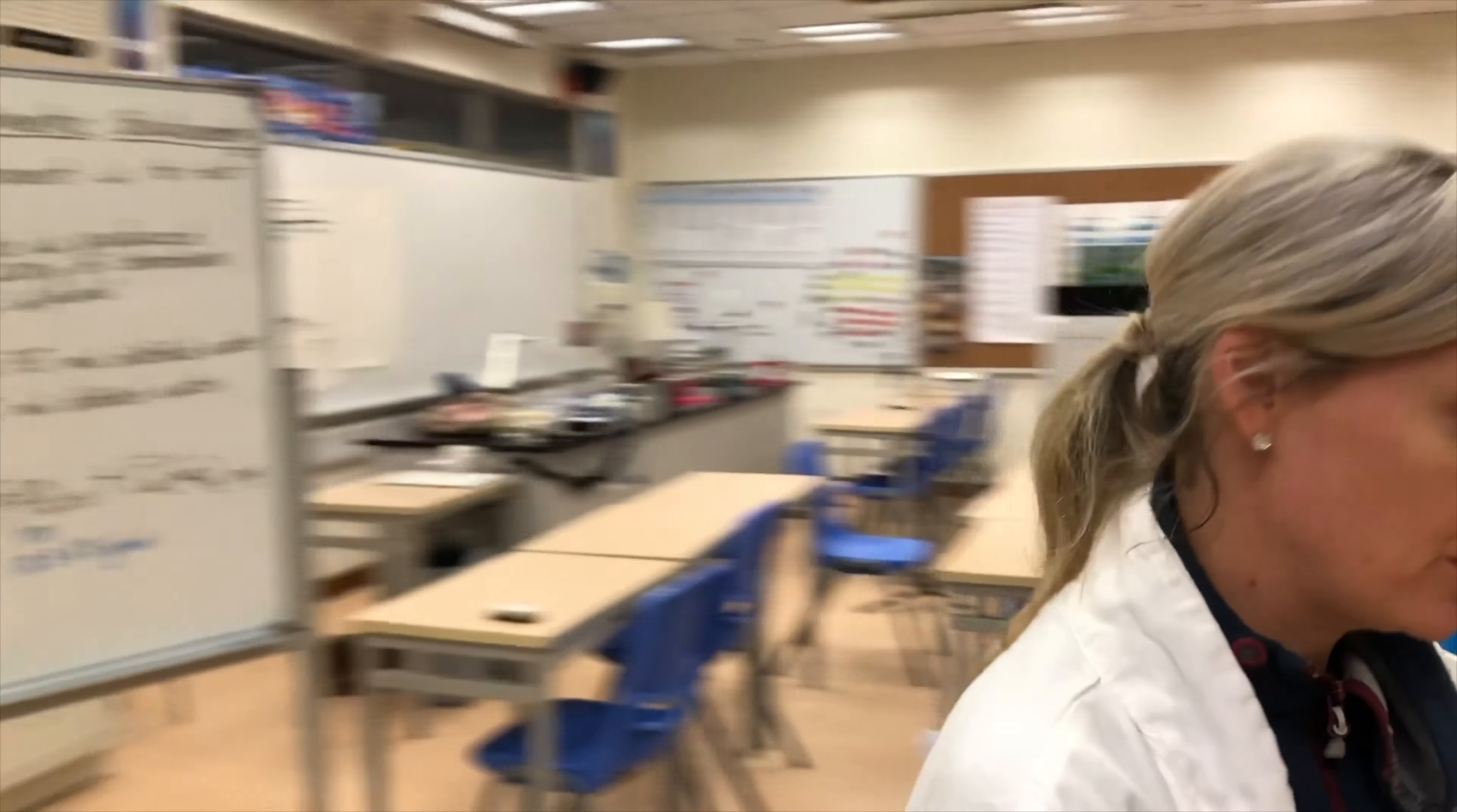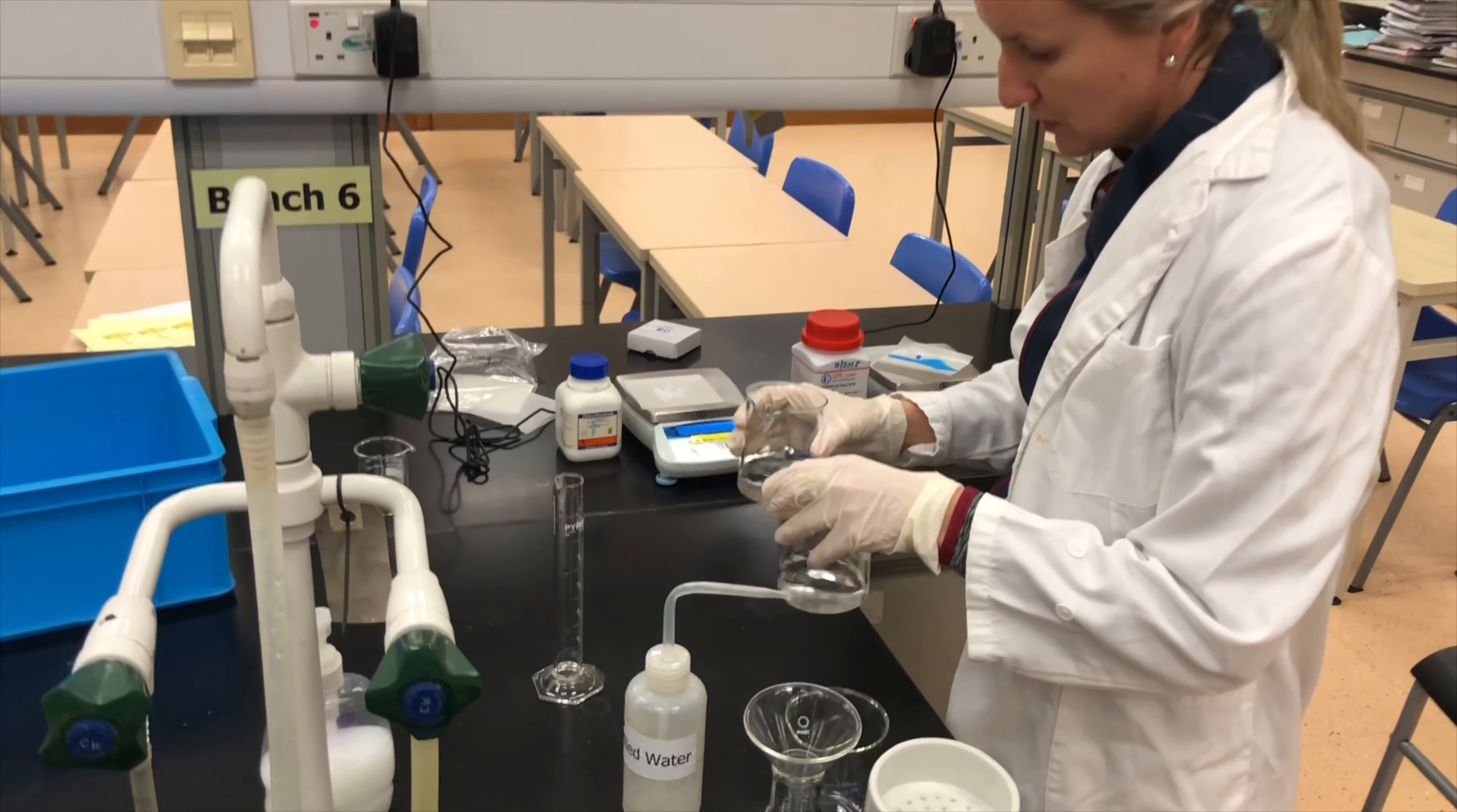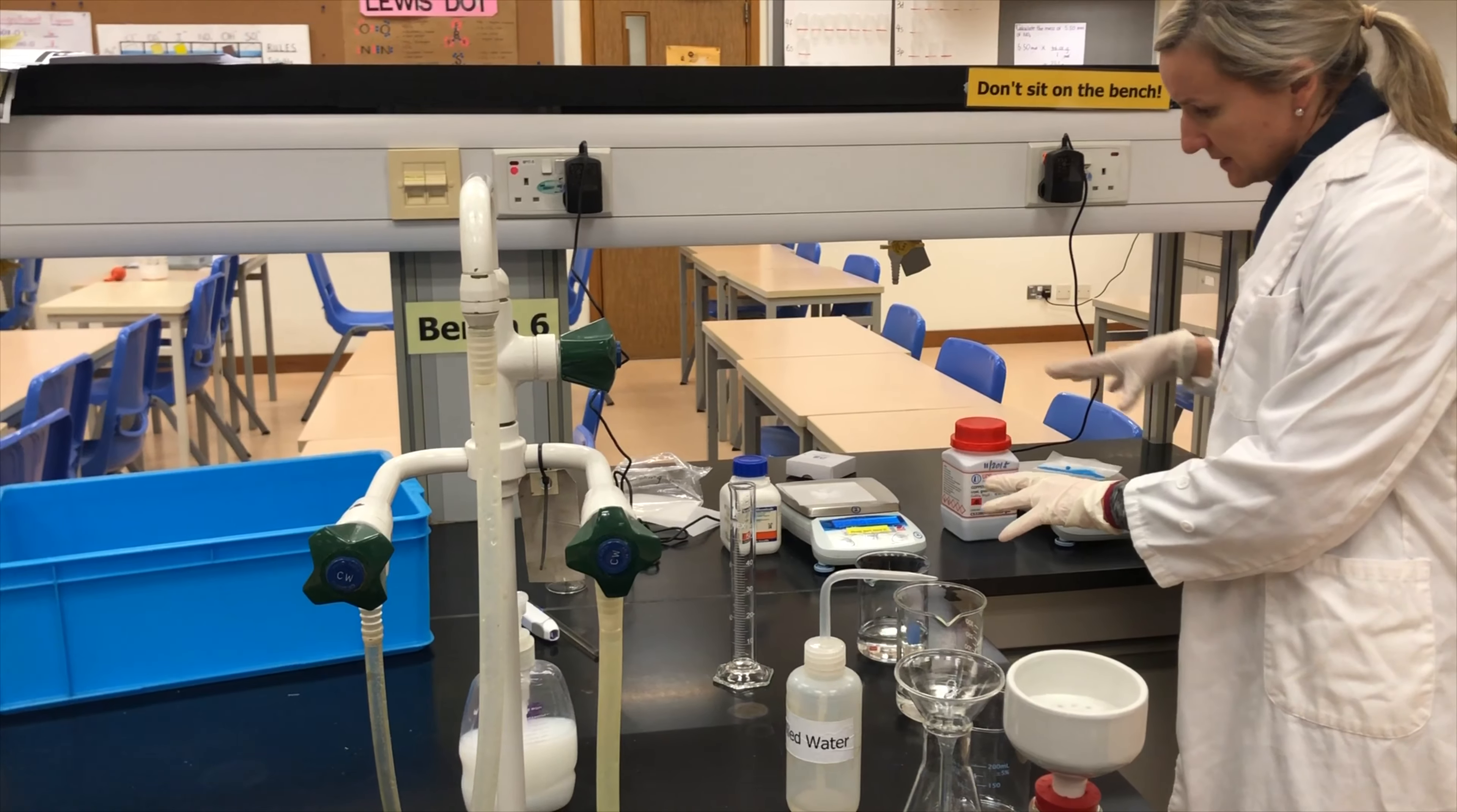So I'm just going to move down to where I've already weighed out our amount of the solid. You can see this is my two beakers where I've used my measuring cylinder to put my 75 ml of distilled water in. I've already done that. I've already weighed this out.